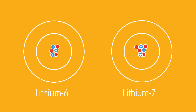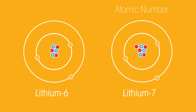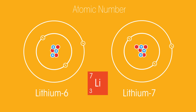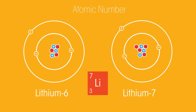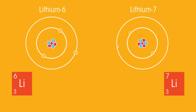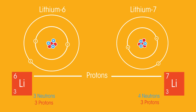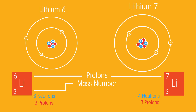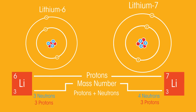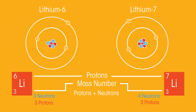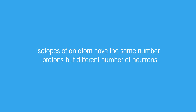Now, for isotopes. All atoms of a particular element will always have the same number of protons in the nucleus — this is called the atomic or proton number. Lithium has three protons, so the proton number is three. But the number of neutrons in an atom can change. Lithium-6 and lithium-7 are both stable lithium atoms. Because they both have three protons, they are both lithium atoms, but this one has a mass number of six and this has a mass number of seven. The difference in mass numbers is because this one has one more neutron in its nucleus. These different forms are called isotopes — so isotopes of an atom always have the same number of protons but different numbers of neutrons.